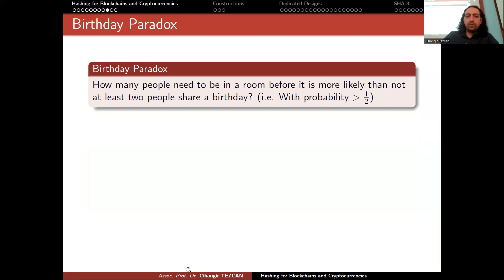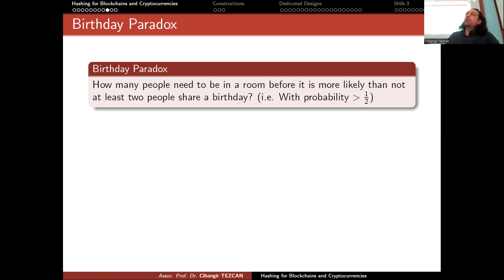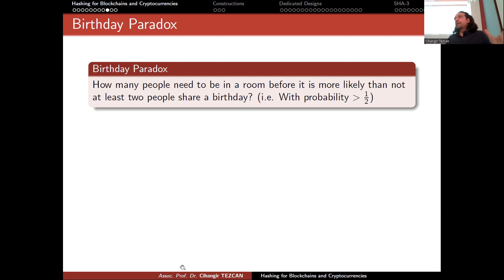Let me briefly explain the birthday paradox. The question is: how many people need to be in a room before it is more likely than not that at least two people share a birthday — with probability greater than 1/2? You keep adding people to an empty room. Since there are 365 days in a year, people think the answer might be around 100 or 200, so they expect a large number.